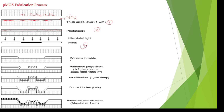In the fifth step, we remove the unwanted photo resist as well as the silicon dioxide layer. Where diffusion is required — where we are going to design the source, gate, and drain terminals — the photo resist and silicon dioxide layer are removed.